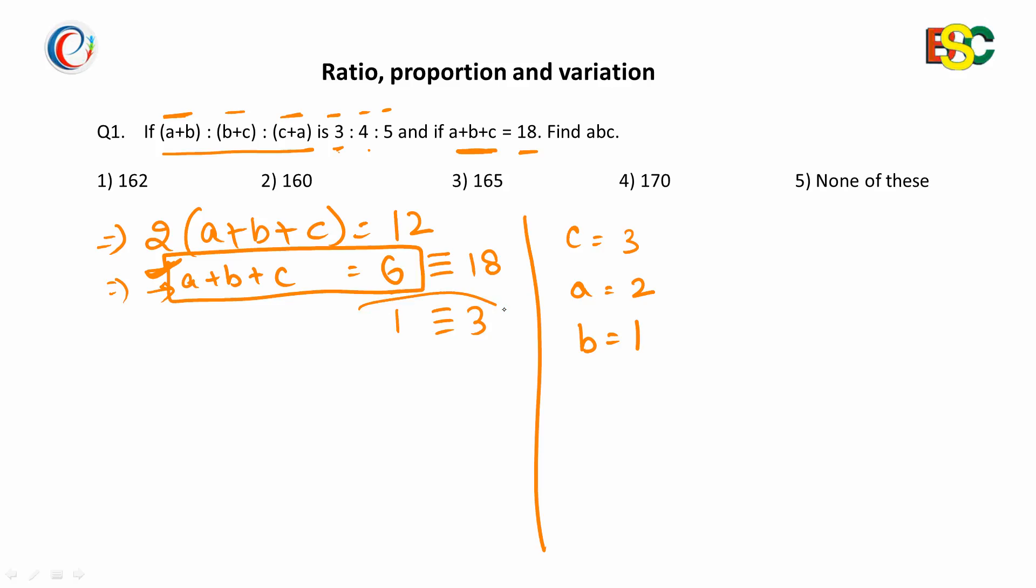Since you have already derived that 1 is equal to 3, so 3 gets equal to 9, 2 gets equal to 6, and 1 is equal to 3. Now you have obtained the values of a, b, c. On multiplying these three numbers, 9 into 6 into 3, you will obtain 162, which is our desired answer. Option number 1 is our desired answer.